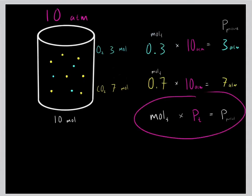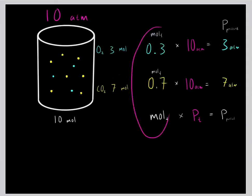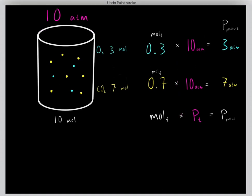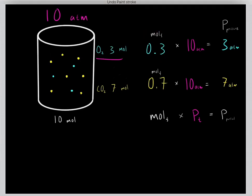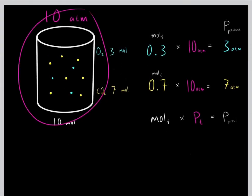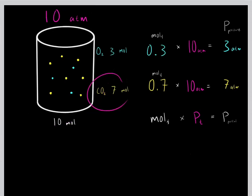An important formula: if you take the mole fraction of a gas and multiply it by the total pressure, that gives you the partial pressure of that gas. Oxygen has a mole fraction of 0.3 and we have a total pressure of 10 atmospheres, so oxygen has a partial pressure of 3 atmospheres. Similarly, carbon dioxide has a mole fraction of 0.7 multiplied by 10 atmospheres, giving a partial pressure of 7 atmospheres.